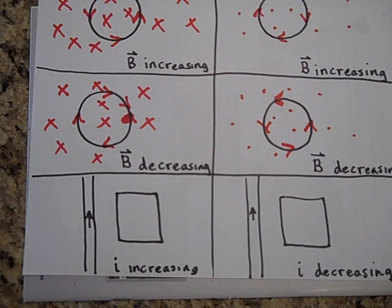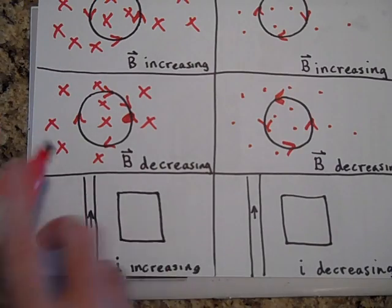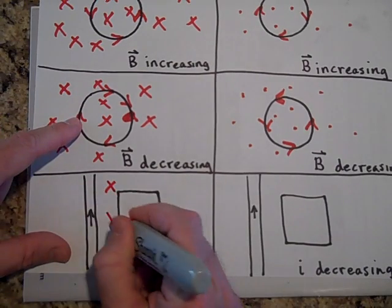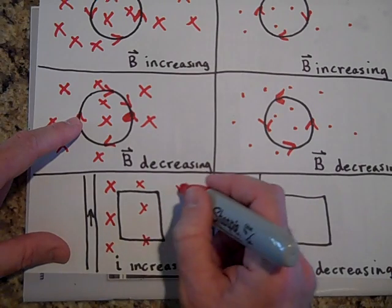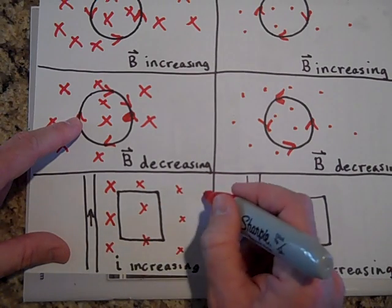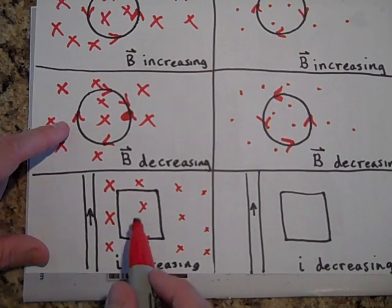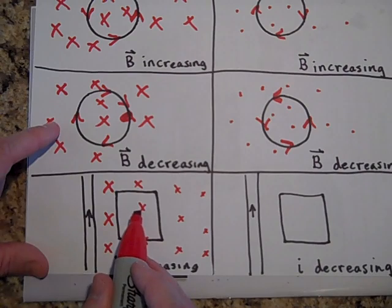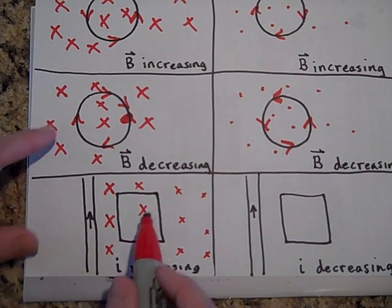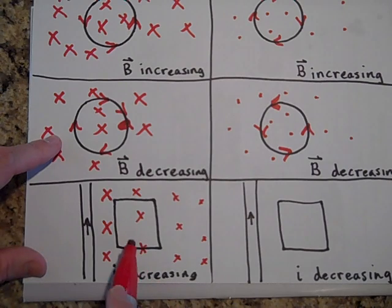If I is increasing, then there are x's here — they're strong here and drop off farther out. But there are x's, and if I is increasing those x's are getting bigger. So the hoop is going to try to negate that effect by making its own dots.